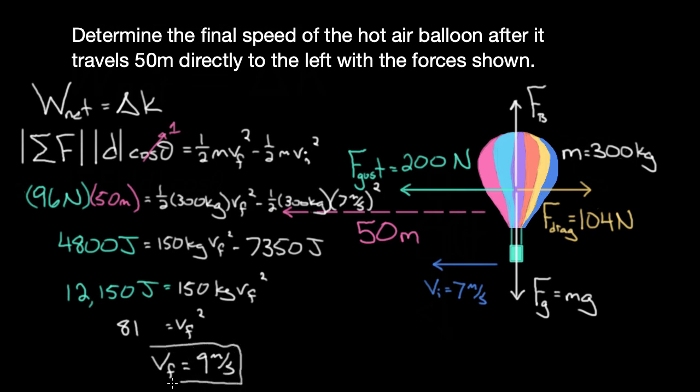It's sped up. That's not surprising—the net force was directed leftward and the object was moving leftward. We're doing positive work, increasing the kinetic energy. We started with 7 m/s and ended with 9 m/s. This is an example of how you use the work-energy principle.